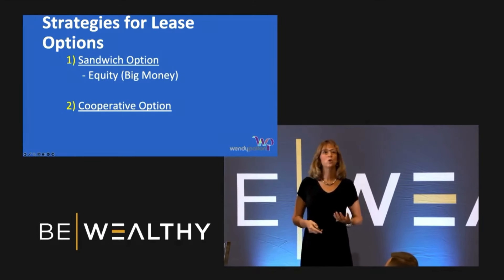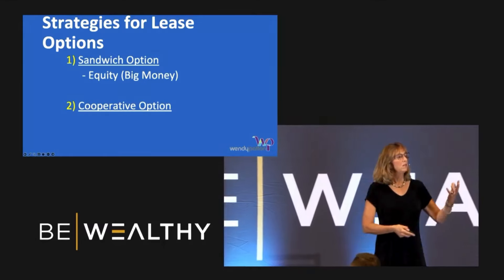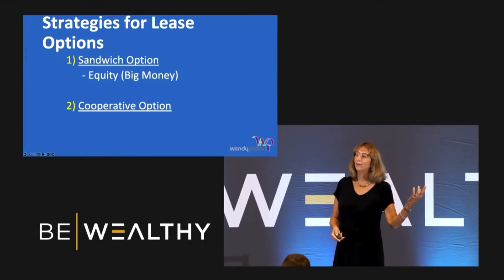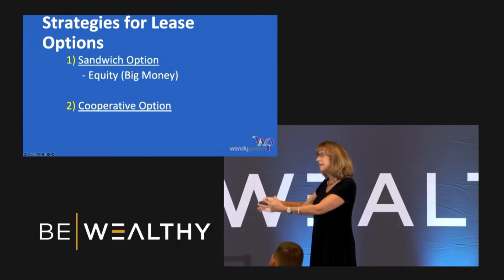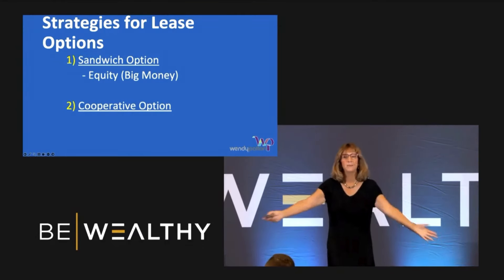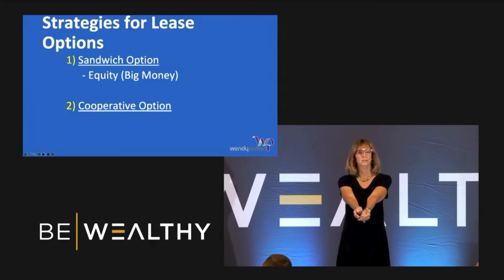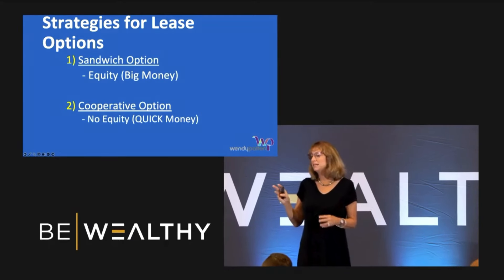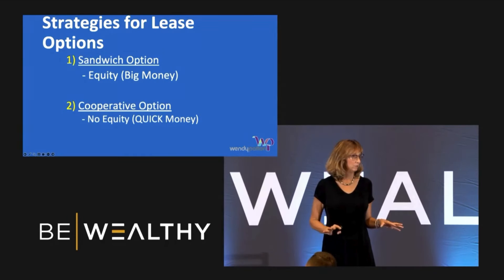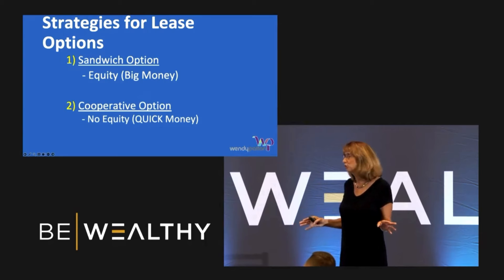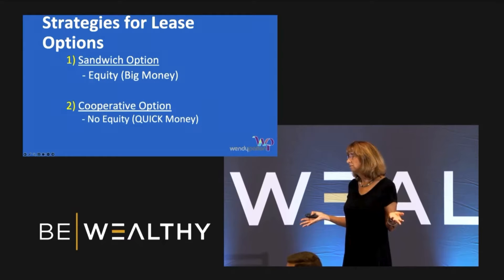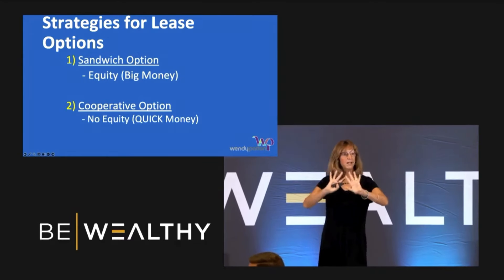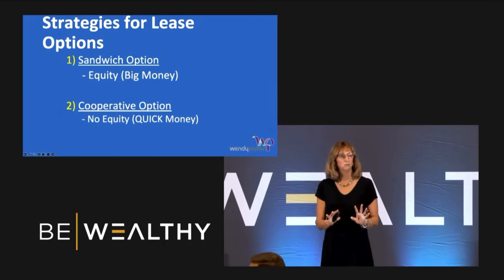The other one is called a cooperative lease option, where you're cooperating and working with the homeowner. It's really a wholesale deal, but it's an option. The seller is willing to do a certain thing with the lease option, I find the tenant buyer, then I step out of the deal. Typically what I take is the option fee from the tenant buyer, which is usually three to five percent of the purchase price — kind of like a commission.